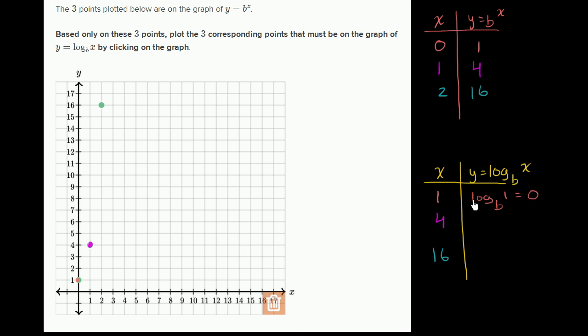So this is going to be zero right here. We have the point (1, 0). Notice this point corresponds to that point. We've essentially swapped the x's and y's. In general, when you're taking an inverse, you reflect over the line y equals x. This is clearly a reflection over that line.